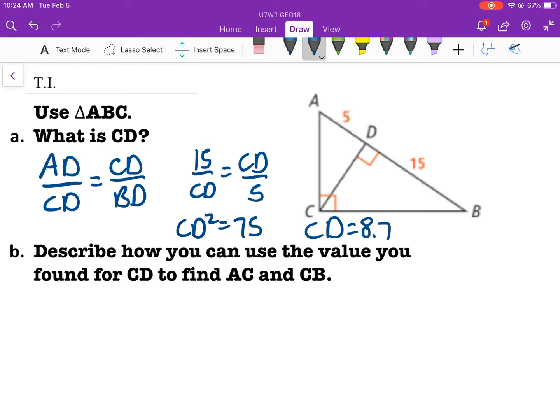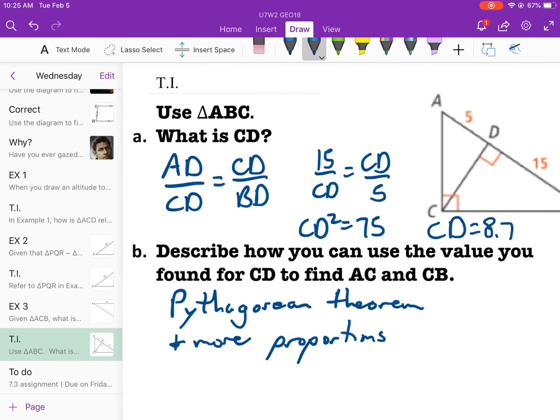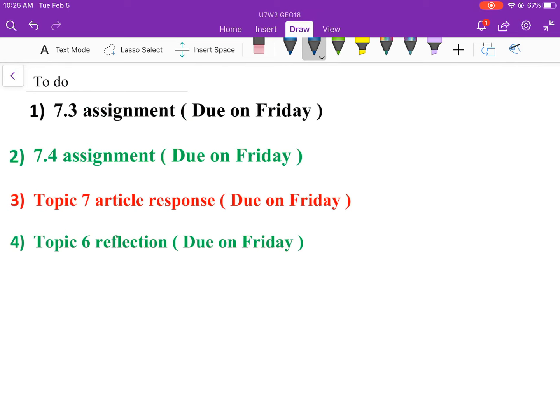However, you can use the value you've found for CD to find AC and CB. So that would be the Pythagorean theorem and more proportions. All right. Here's your list. When stuff is due. Hope you have a wonderful day. See you, kids.